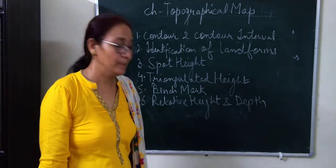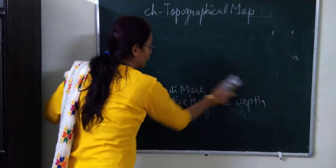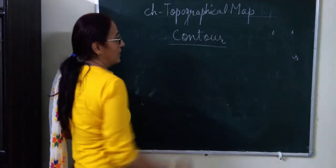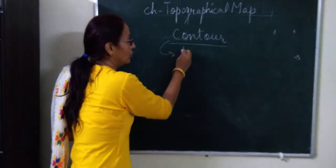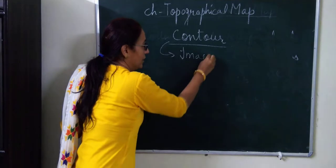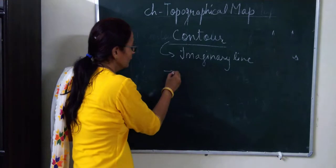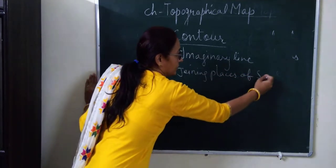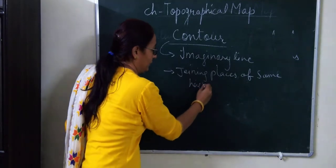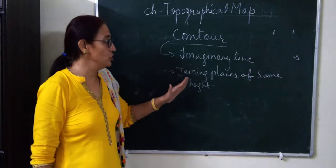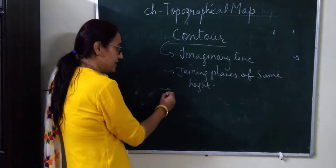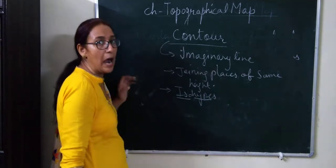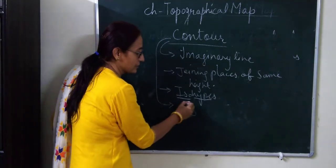What is contour? Contour is an imaginary line joining places of same height. Contour lines are also called isoheights — 'iso' means same and 'height' stands for height. The symbol used for contour is circular lines.